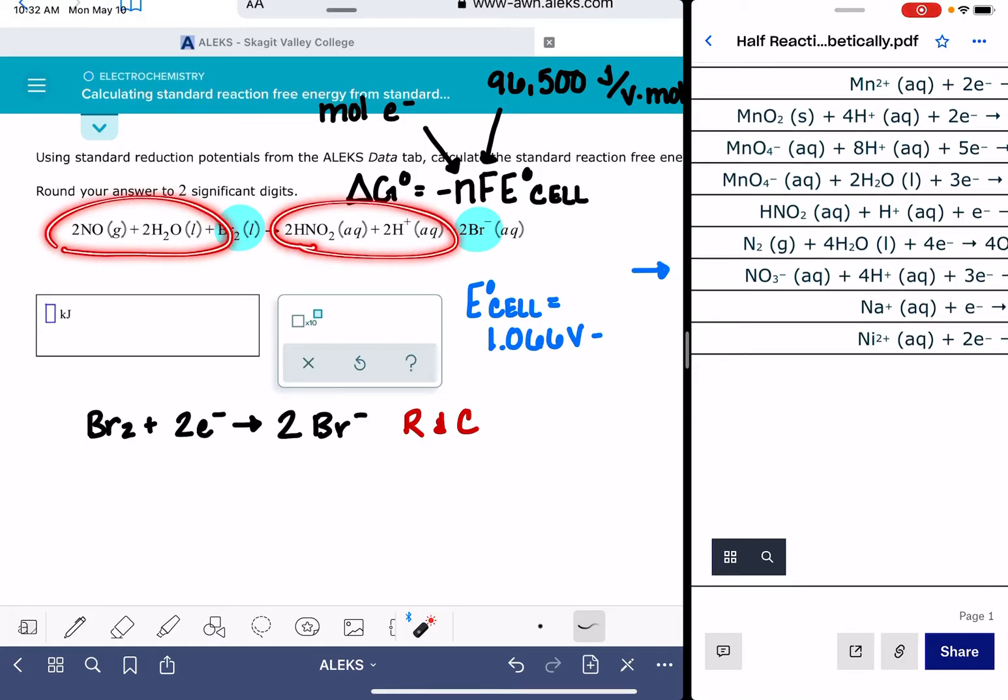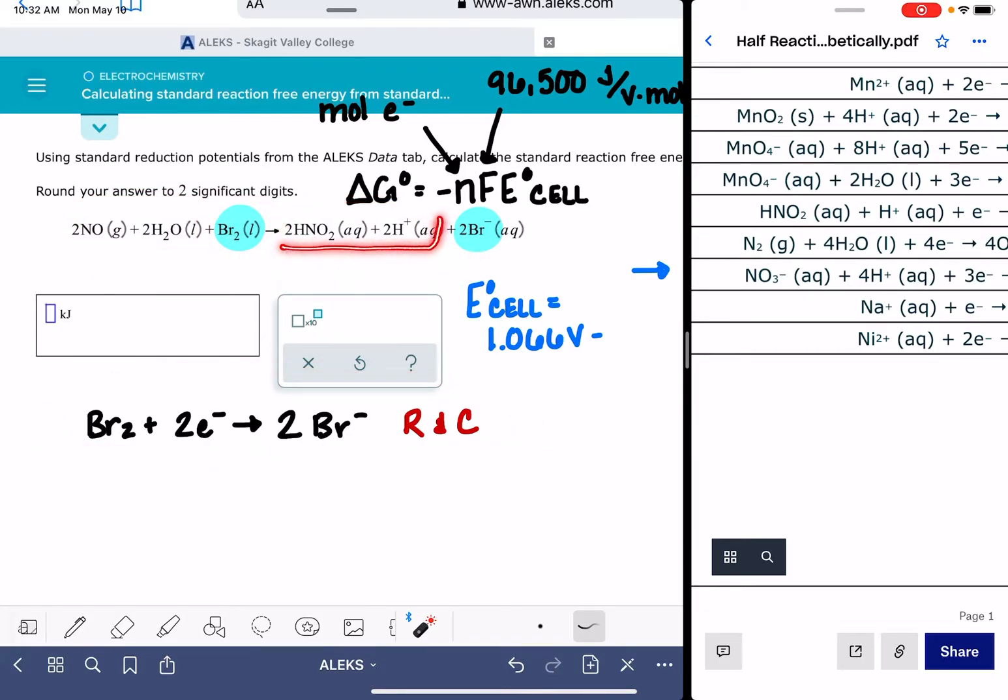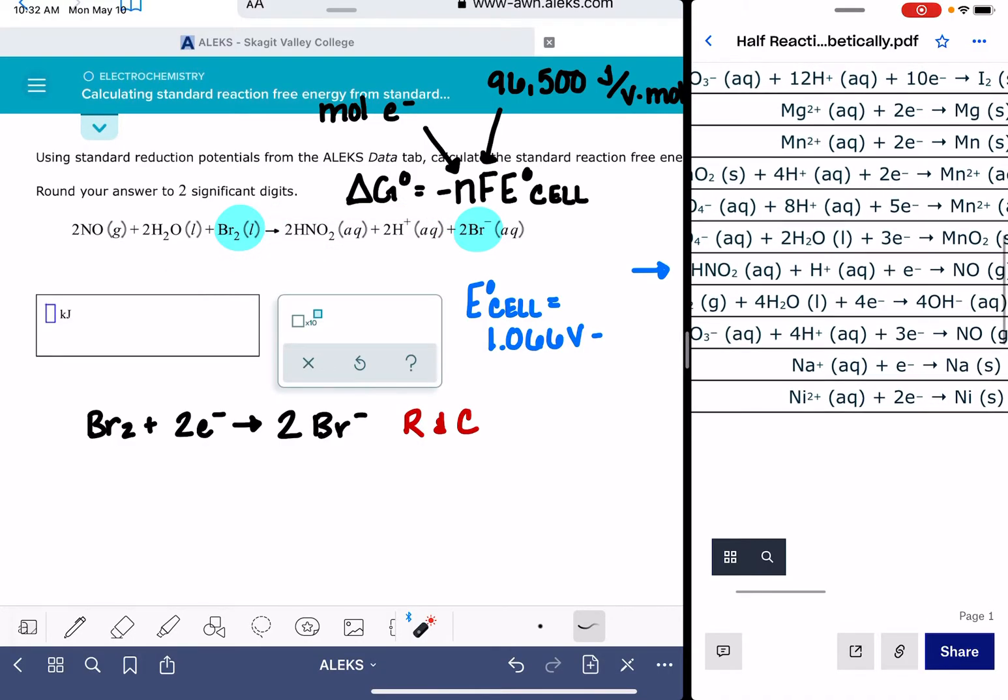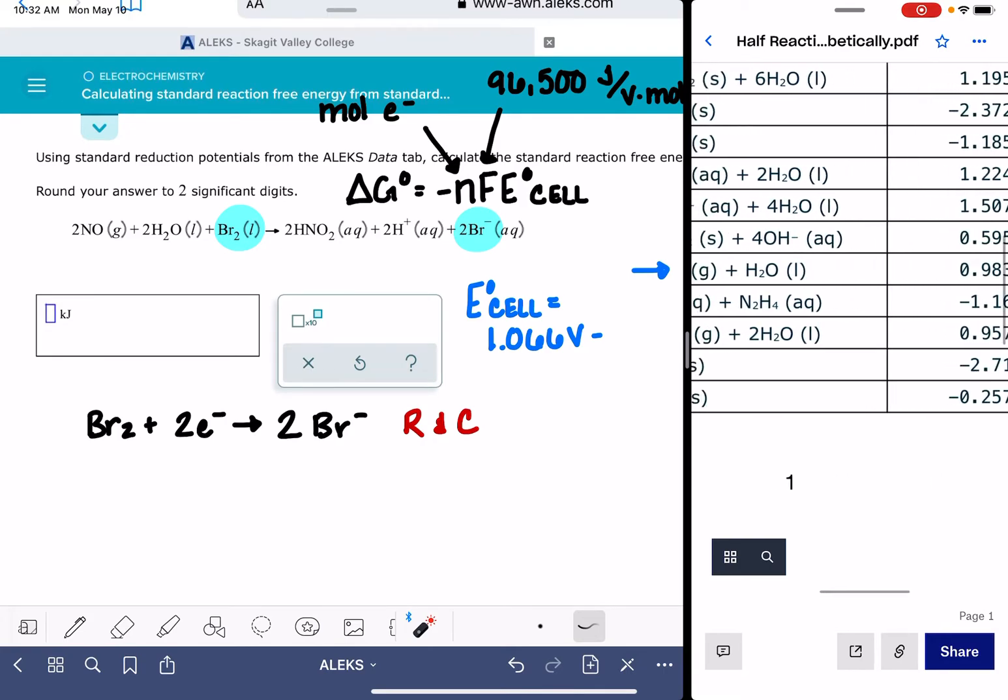And remember that this half reaction, this one is going to be the oxidation because this half reaction is our reduction. So what I'm actually looking for are these molecules right here as the reactants because this one is going to be written in reverse. And it looks like it's right here.